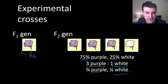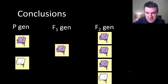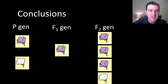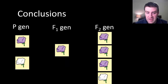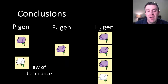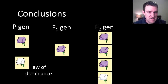Seeing that mathematical pattern, Mendel was smart enough to figure out what was going on. His first conclusion was the law of dominance: one trait seems to completely dominate the other when you cross two pure breeds. In this case, purple completely dominates white.